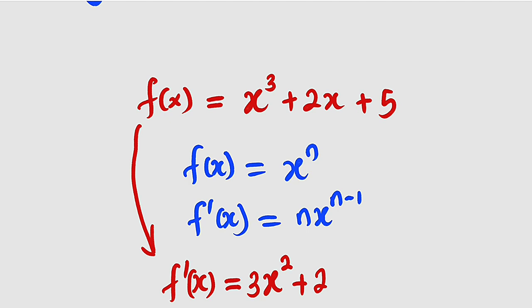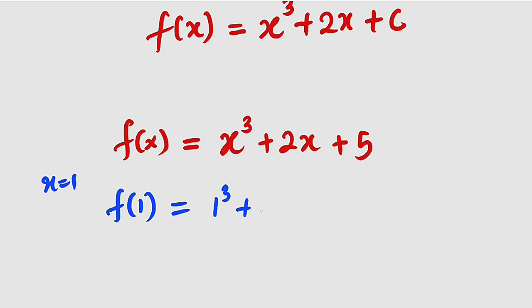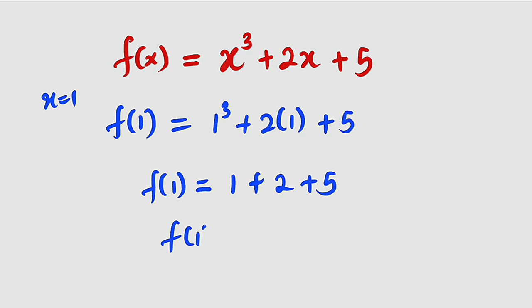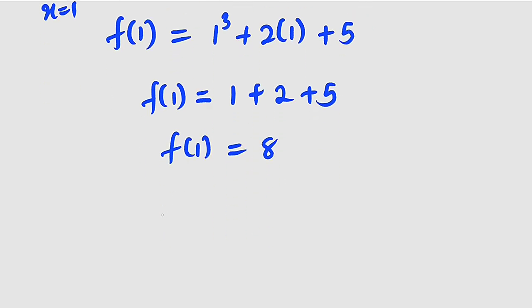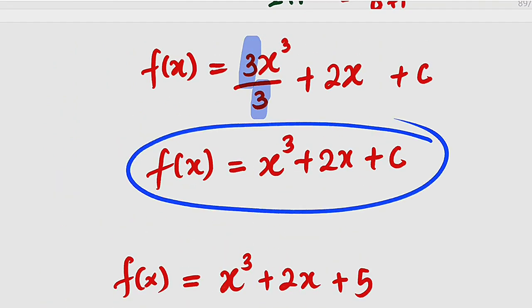What are we going to do? We are going to obtain an initial condition. We can substitute any value for x to obtain the corresponding value of f of x. Remember, this is the original function. So what if x is equal to 1? We have f of 1 equal to 1 to the power of 3 plus 2 times 1 plus 5. f of 1 equals 1 plus 2 plus 5, which is 8. Therefore f of 1 is equal to 8, meaning when x equals 1, f of x equals 8.